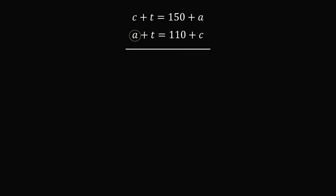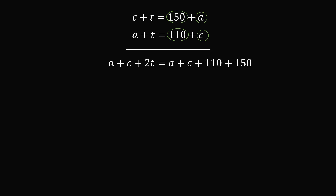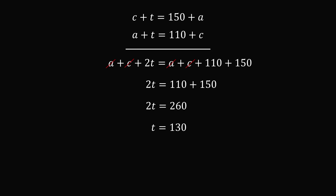On the left side of the combined equation we have a + c + 2t. On the right side we have a + c + 110 + 150. The a cancels out, the c cancels out, and what remains is 2t = 110 + 150, which means 2t = 260. Dividing both sides by 2, we get t = 130 centimeters. The height of the table is 130 centimeters — problem solved!